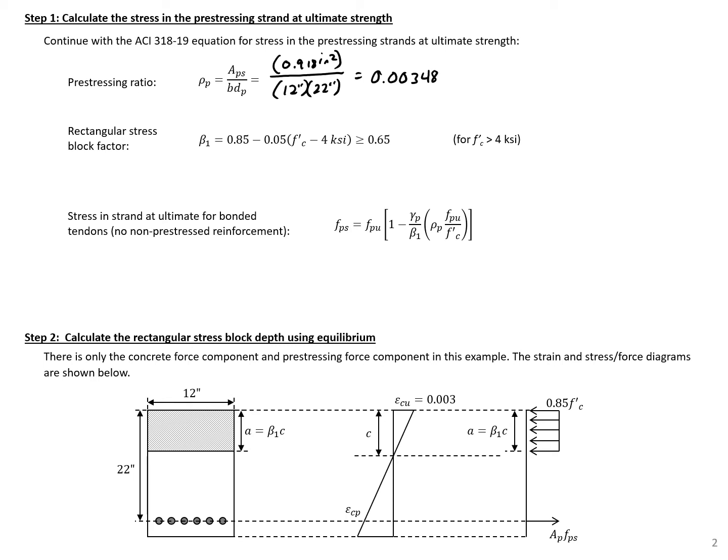Next, we need the beta 1 factor, which equals 0.85 minus 0.05 times (5 ksi minus 4), equaling 0.8. This is greater than the lower limit of 0.65, so we'll use 0.8 in our equations.